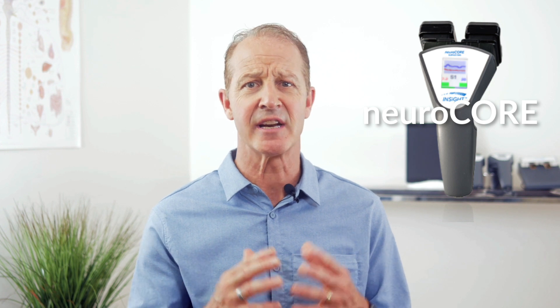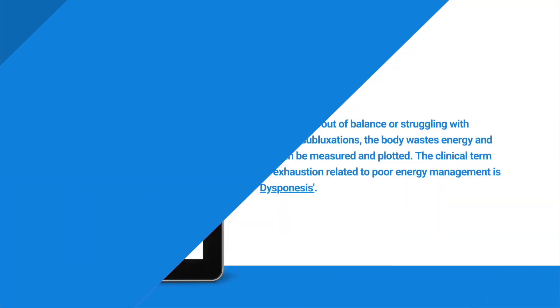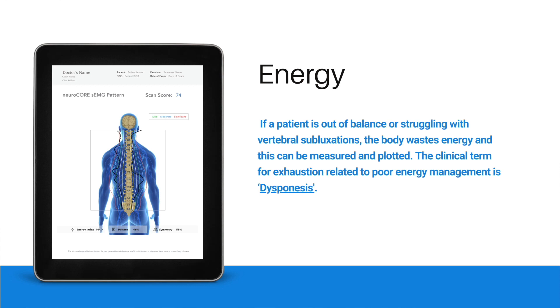E stands for Energy. Postural energy is measured using the NeuroCore EMG. Managing gravity is an extremely expensive experience. If a patient is out of balance or struggling with vertebral subluxations, the body wastes energy and this can be measured and plotted. The clinical term for exhaustion related to poor energy management is dysponesis. Once the patient's overall adaptive reserve has been established, it's time to bring the story into the spine and identify the impact of the vertebral subluxation.